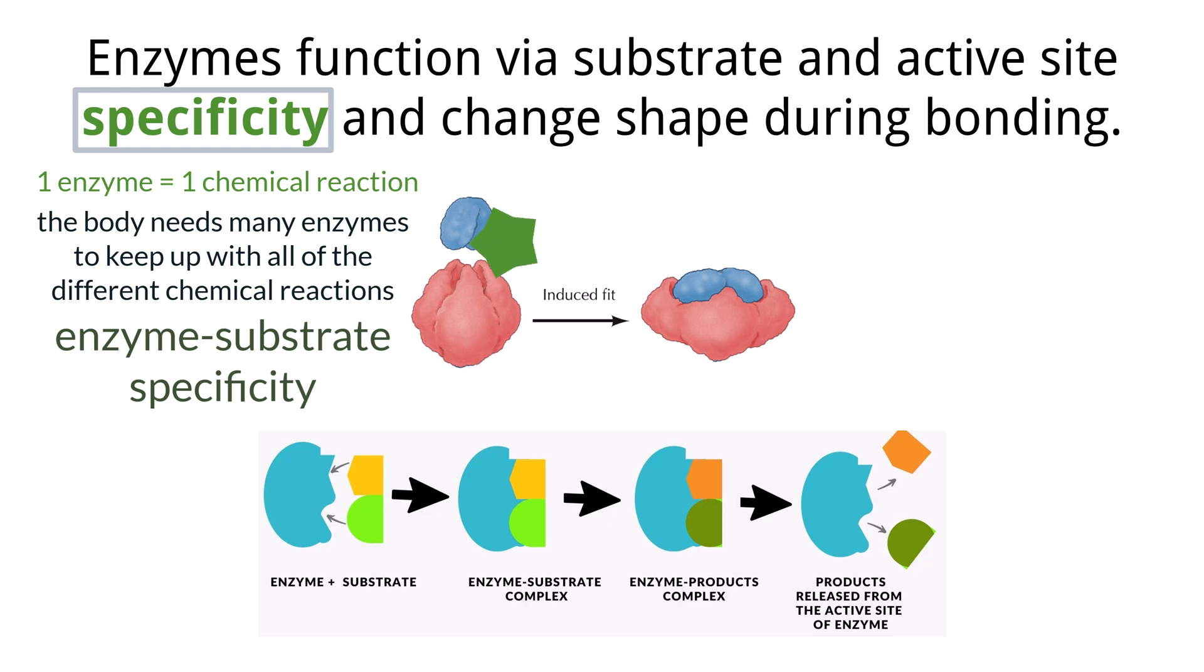If a different substance happens to collide with the active site that does not fit, no bonding will occur and therefore no reaction will happen. It's like a love story where every active site only has one, or a few, specific substrates for them. And it's just a matter of finding them in a sea of all the other molecules within the cell.